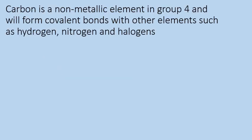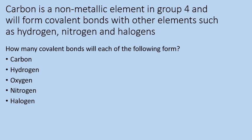Organic chemistry — you'll have studied a little bit at GCSE. It mainly contains carbon and some other elements. Carbon is a non-metallic element in group four, and it will form covalent bonds with other non-metal elements such as hydrogen, nitrogen, and the halogens. I'm going to suggest you pause the video and have a quick look through this list and try to predict how many covalent bonds each of the following atoms will form, then we'll run through each one in turn.